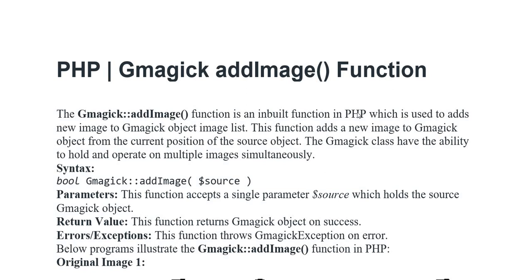Assalamualaikum everyone. In today's video, we will discuss PHP Gmagick addImage function. The Gmagick addImage function is an inbuilt function in PHP, which is used to add a new image to the Gmagick object image list. This function adds a new image to the Gmagick object.